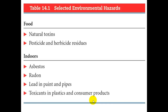In food there are natural toxins — we know about poisonous mushrooms — and also pesticide and herbicide residues. Indoors, we're exposed to lead in old paint and also in some pipe solder. We also have compounds called phthalates in plastics, and radon, a radioactive gas that can seep into your home from nearby rock. Asbestos is a component of insulation and building materials that was used to make them flame retardant.